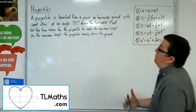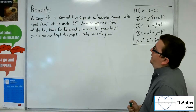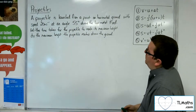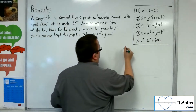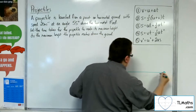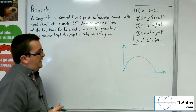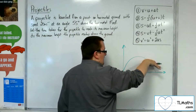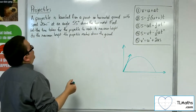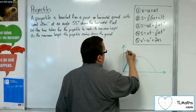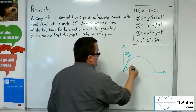In this problem, we've got a projectile launched from a point on horizontal ground with speed 20 metres per second at an angle of 55 degrees above the horizontal. Here is our projectile being fired off — it goes through the air and then hits the ground, set off at an initial speed of 20 metres per second at an angle of 55 degrees to the horizontal.